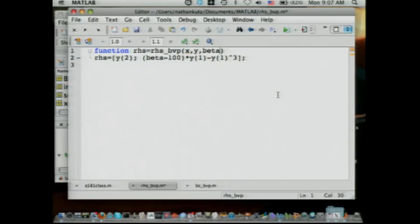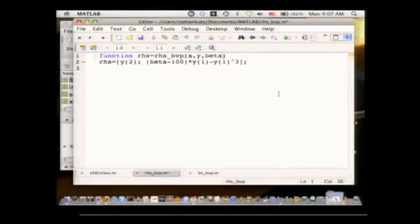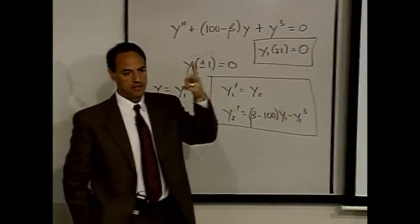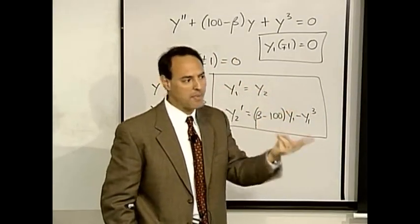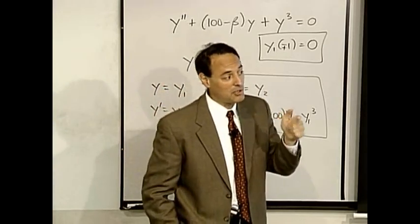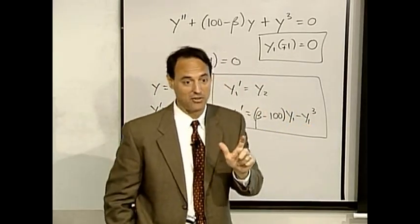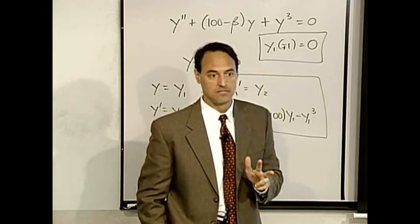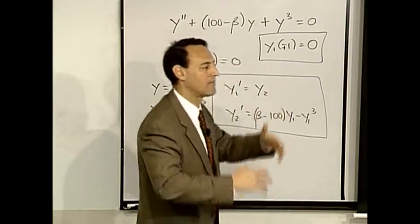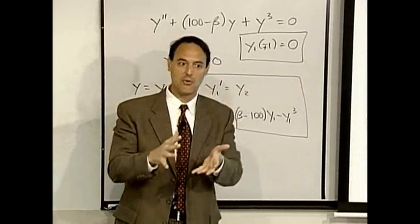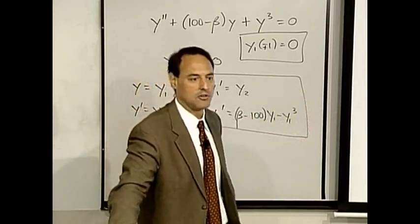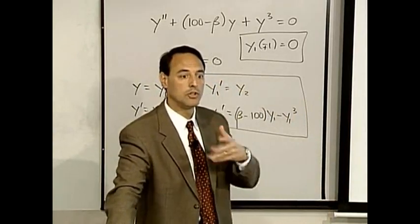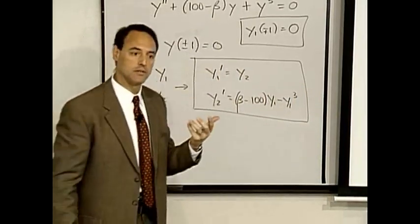Let's go back to the board. I have this second-order ODE and I have to specify two things to nail it down. But wait — what's this beta doing here? I also have beta that I don't know. So ultimately, to get a solution out, you have to specify one more condition. It's like having three unknowns and two equations — it's underdetermined. MATLAB will tell you it can't solve underdetermined systems because there's an infinite number of solutions. So you have to make up a third constraint.